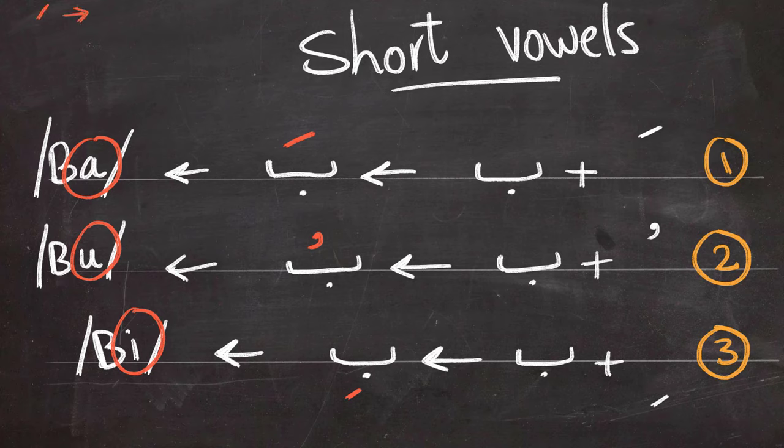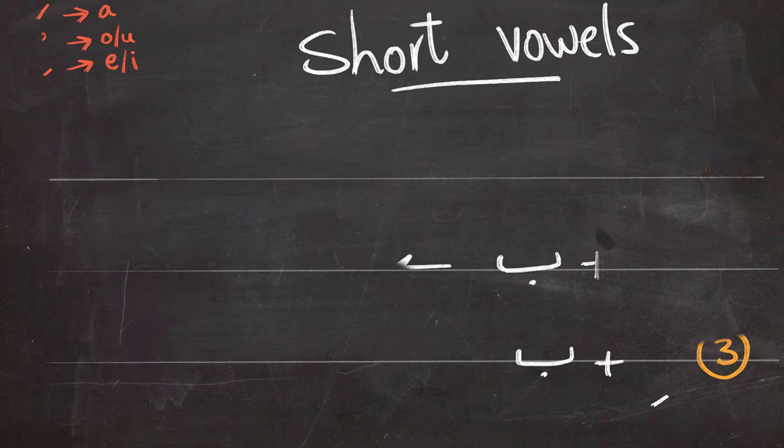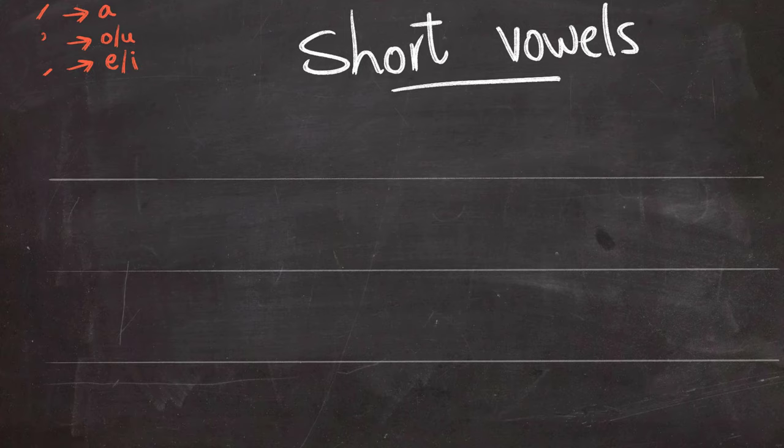And in order to keep track of these three short vowels, I'm going to write them on the top left corner so that they will stay there for the remaining of the lesson.